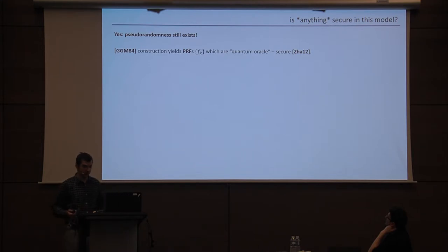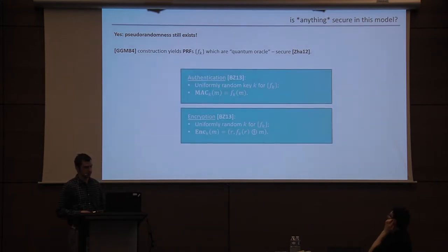But in any case, I'd like to convince you that the model is certainly of theoretical interest. So first of all, is anything secure at all in this model? Is it a trivial model? So yes, things are secure because we still have pseudo-randomness. Jandri showed that in fact the same sort of GGM construction for pseudo-random functions, but with a more complicated proof, happens to be quantum oracle secure. So even if the adversary gets to plug in superpositions of inputs into the PRF and get back the corresponding superposition of outputs, still it looks like a random function. Of course you have to start from a quantum one-way function. And this yields authentication and encryption that's secure in this model using the standard constructions that we use from PRFs. So the standard PRF MAC and the standard symmetric encryption scheme from PRFs just works.